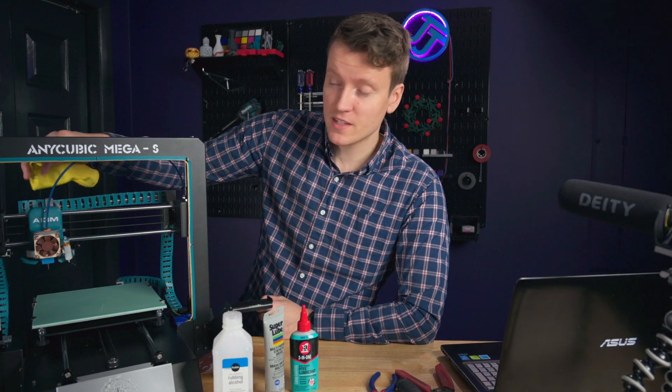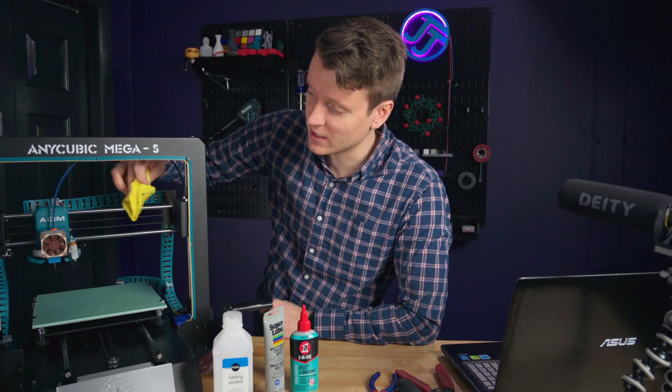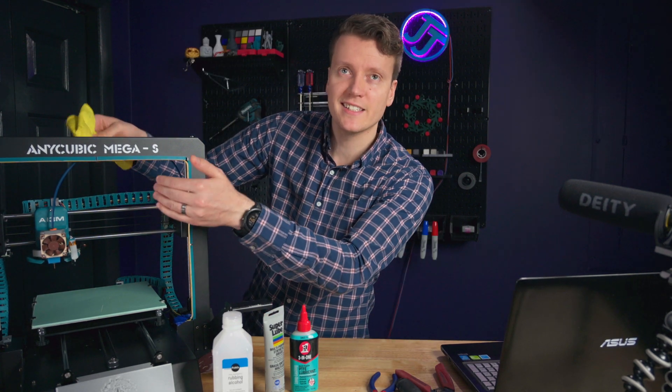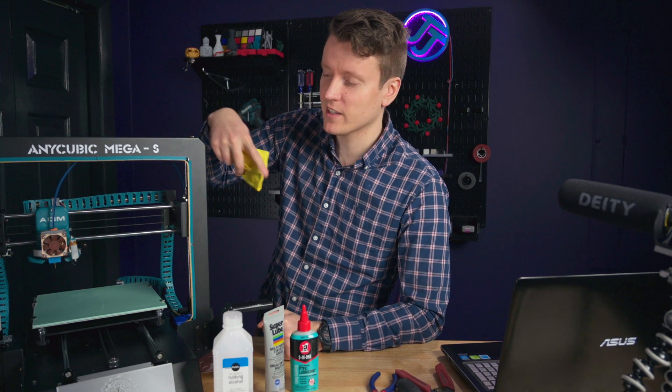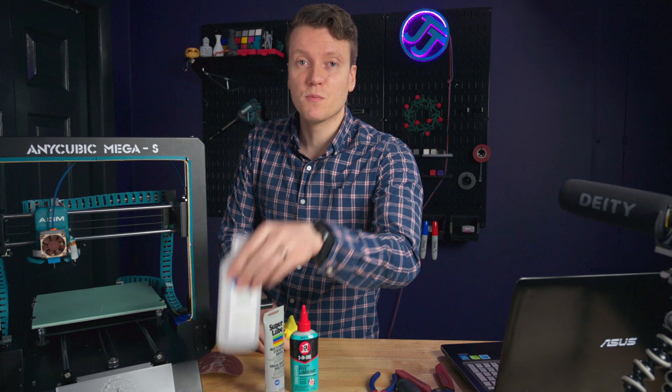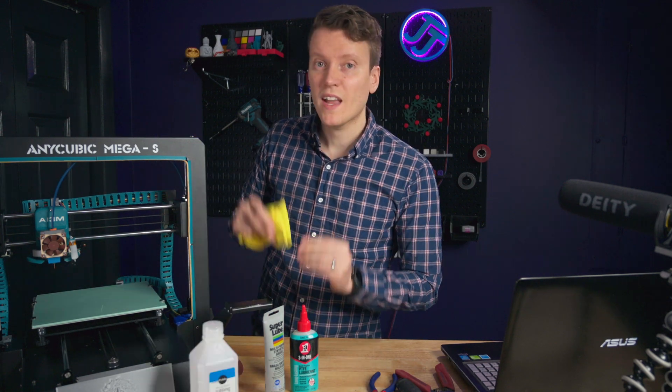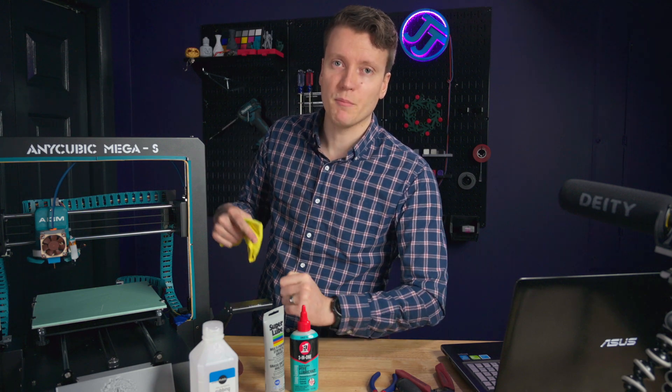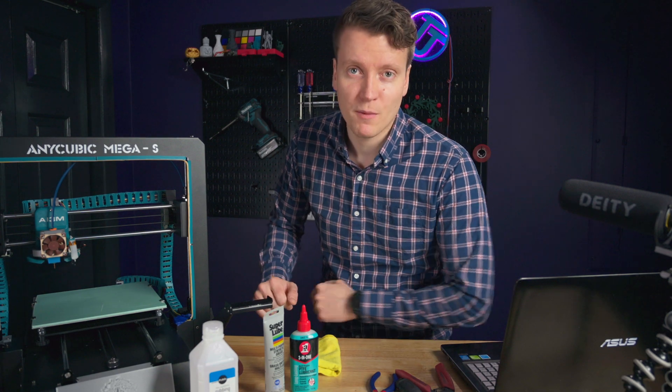Just a simple wipe down will help prolong a lot of your 3D printer's life. Now on your motion system. Here we've got linear rods that this slides along. You could use a dry towel to clean up any dust that usually collects at the ends of the rods. If you're about to lubricate it, which is the next step we're going to get to, then you can use some isopropyl alcohol to clear off any lubrication that's already on the rods. Don't clean it with alcohol unless you're going to lubricate it next.